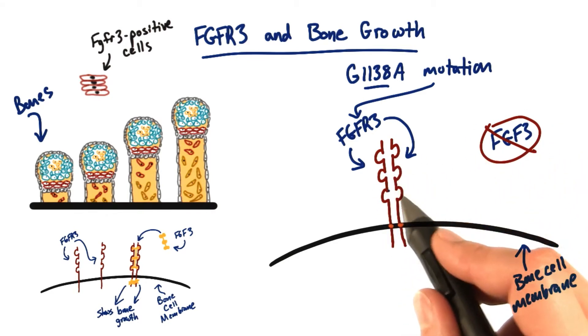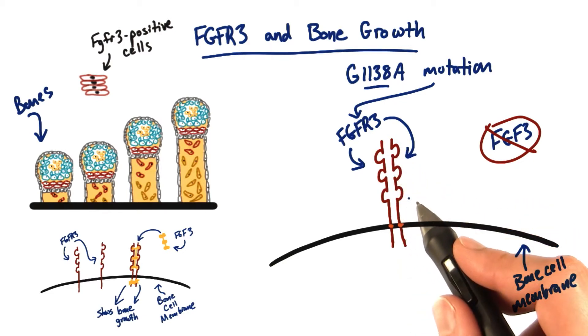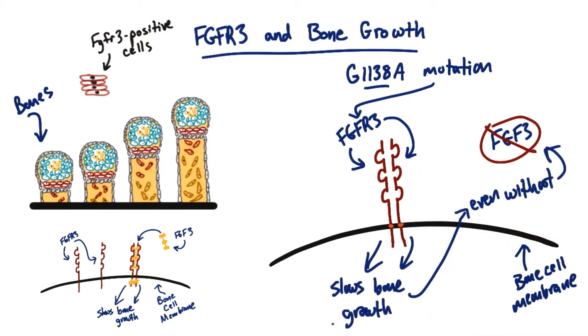We don't see that yellow protein connecting the two FGFR3s. This means we're going to slow down bone growth like we normally would, but now it's going to happen even when the FGF3 isn't around.